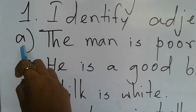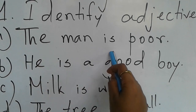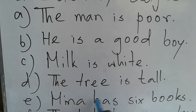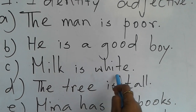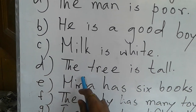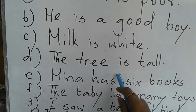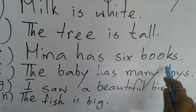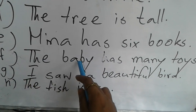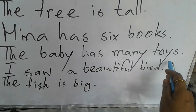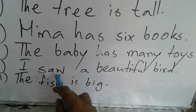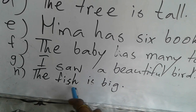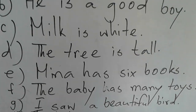Number A: a) The man is poor. b) He is the good boy. c) Milk is white. d) The tree is tall. e) Meena has six books. f) The baby has many toys. g) I saw a beautiful bird. And last, h) The fish is big. Students...